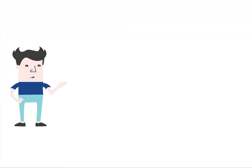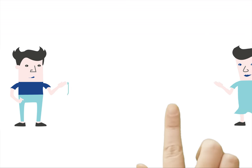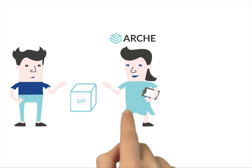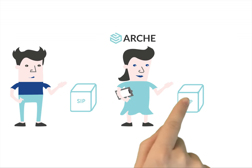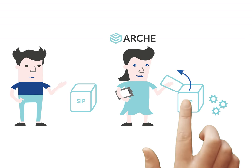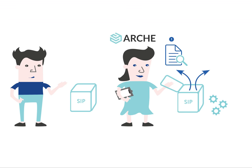He sends the SIP to Nora, who performs some automatic checks. Thanks to the BagIt format, Nora can also check the data for its completeness and integrity, which may have been compromised during the transfer.